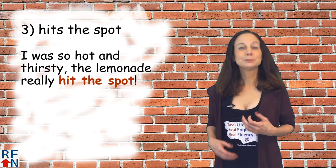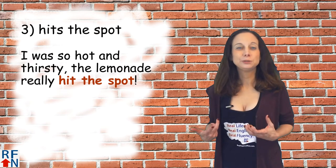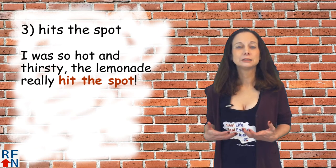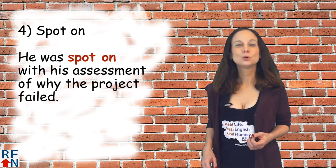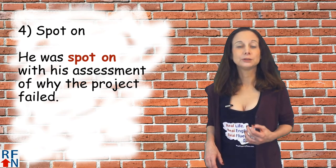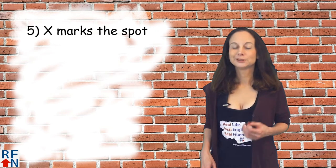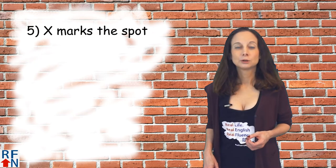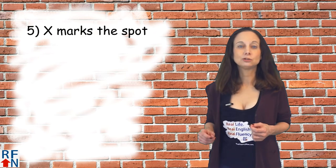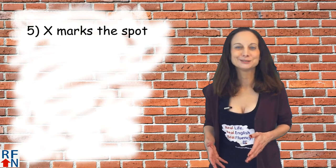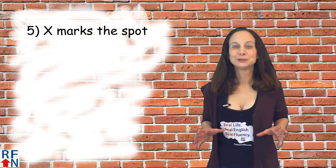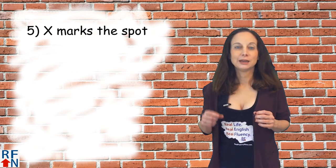Number three is 'something hits the spot,' meaning it really meets your needs — usually food or drink — like 'I was so hot and thirsty, the lemonade really hit the spot.' Number four is 'spot on,' which means to be exactly right, as in 'he was spot on with his assessment of why the project failed.' Number five is 'X marks the spot,' meaning the exact location of something — especially in stories about pirates and buried treasures, where X may be written on a map to mark the location.